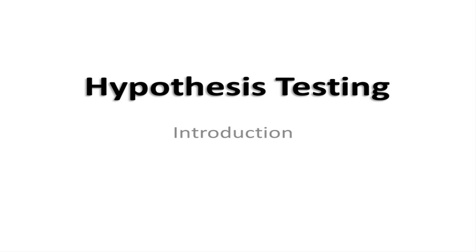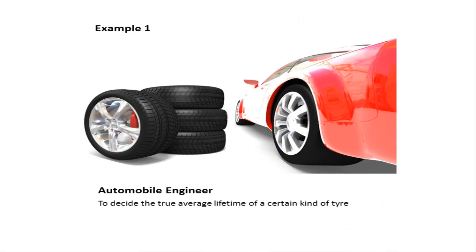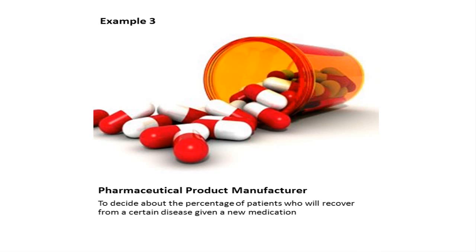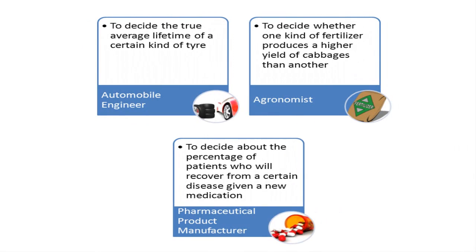Let me give you an example. Suppose an automobile engineer has to decide, on the basis of sample data, whether the true average lifetime of a certain kind of tire is at least 70,000 kilometers. Or consider an agronomist who has to decide whether one kind of fertilizer produces a higher yield of cabbages than another. Or a manufacturer of pharmaceutical products who has to decide whether 90% of all patients given a new medication will recover from a certain disease. All these problems can be translated into the language of statistical tests of hypothesis.